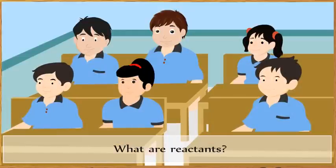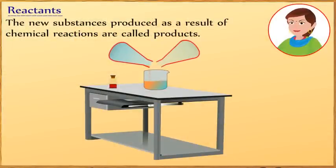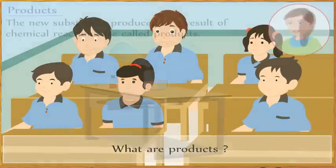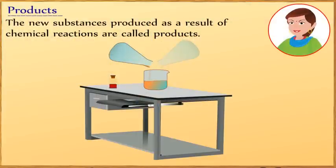What are reactants? The substances which take part in the chemical reaction are called reactants. What are products? The new substances produced as a result of chemical reaction are called products.